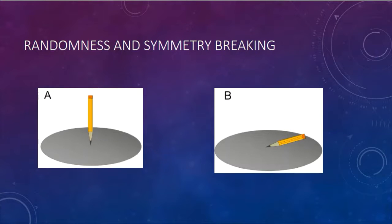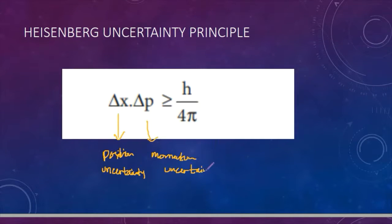And in quantum mechanics, if you have accurate knowledge about the position, then you have inaccurate knowledge of momentum, or how fast it's moving. So if you know how fast it's moving, you don't have the accurate position measurement.